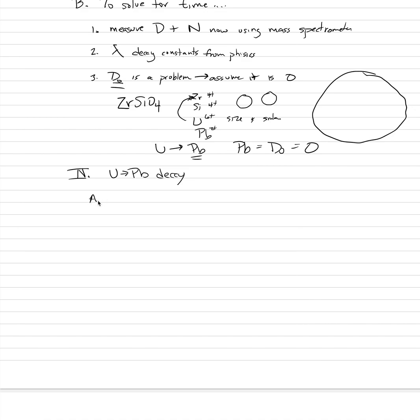Uranium-lead is pretty cool because there are actually two different decay schemes we can use. 99% of uranium-lead decay takes the form of uranium-238, which has atomic number 92, decaying to lead-206 (Pb-206), which has atomic number 82. The half-life for this is 4.4 billion years.